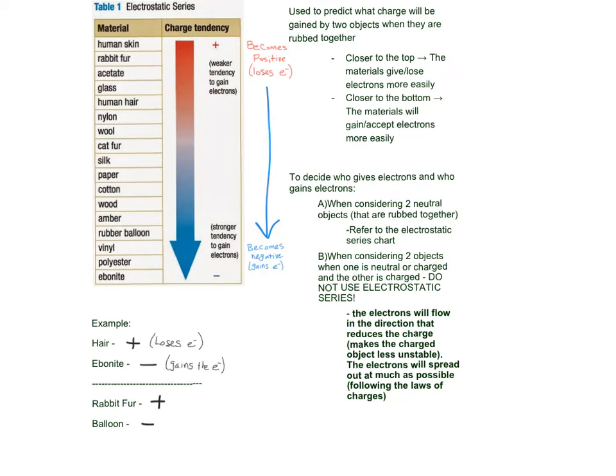There's two ways that we try to figure out where electrons are moving. When we're talking about friction, we pretty much always refer to our electrostatic series.